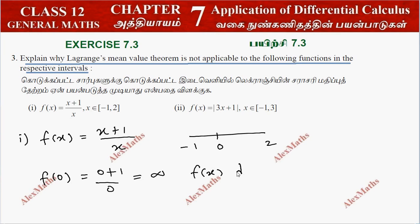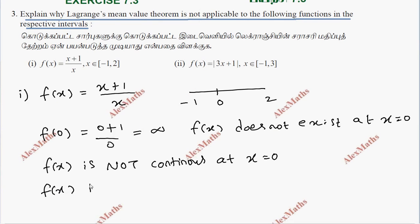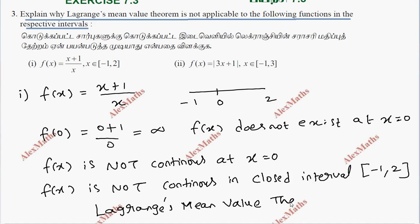So f of x does not exist at x equal to 0. Therefore f of x is not continuous at x equal to 0. But 0 belongs to the interval. That's why f of x is not continuous in the closed interval minus 1 to 2. That's why Lagrange's mean value theorem is not applicable.